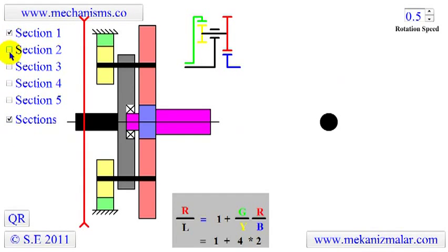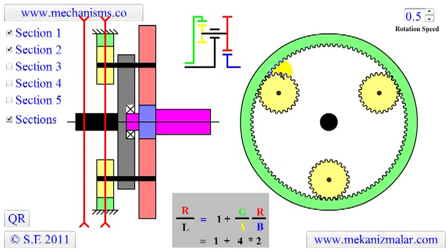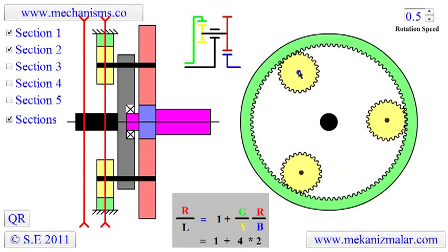The first section shows the cross section of the input shaft. Here, the red line shows where the section has been cut. The second section shows the green annulus ring and yellow planets.